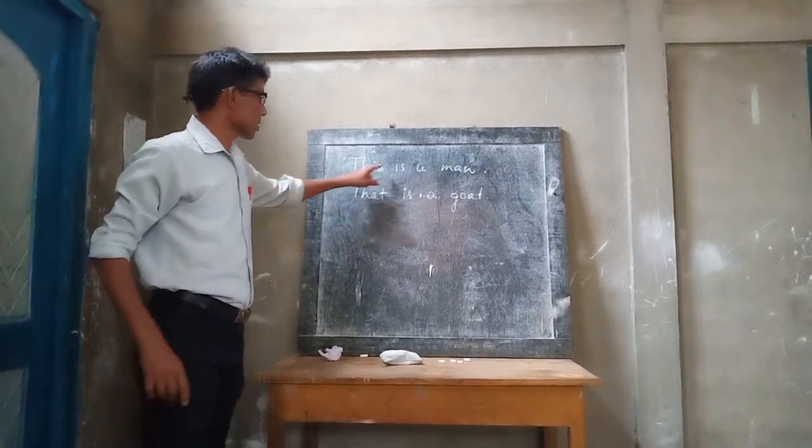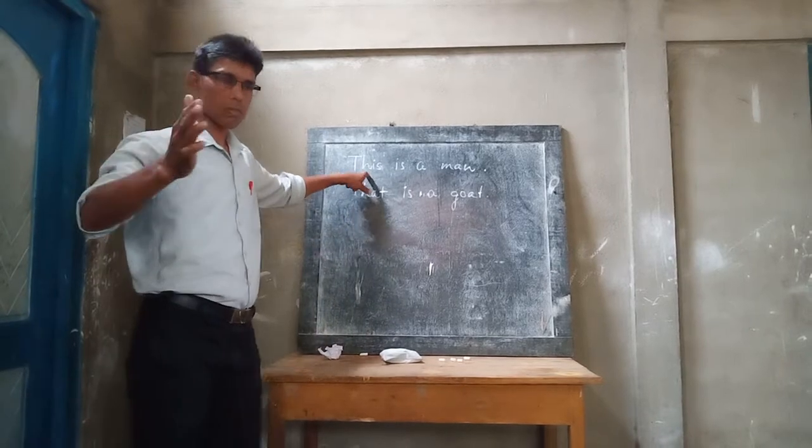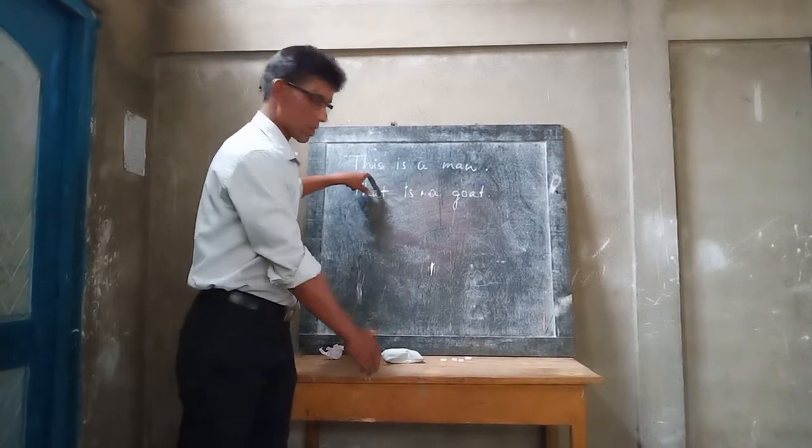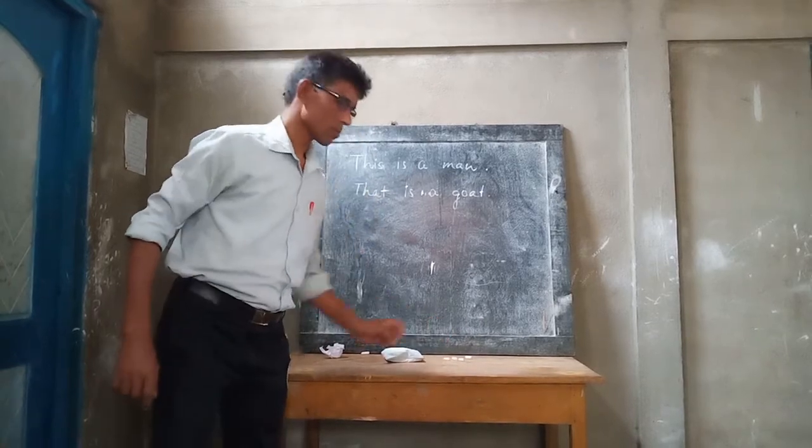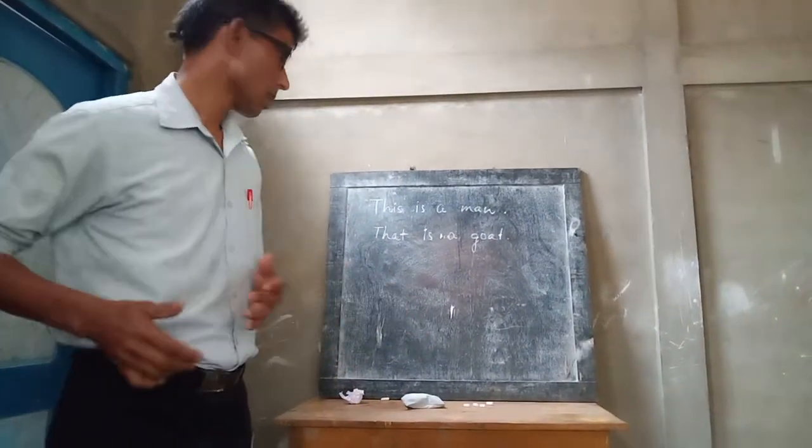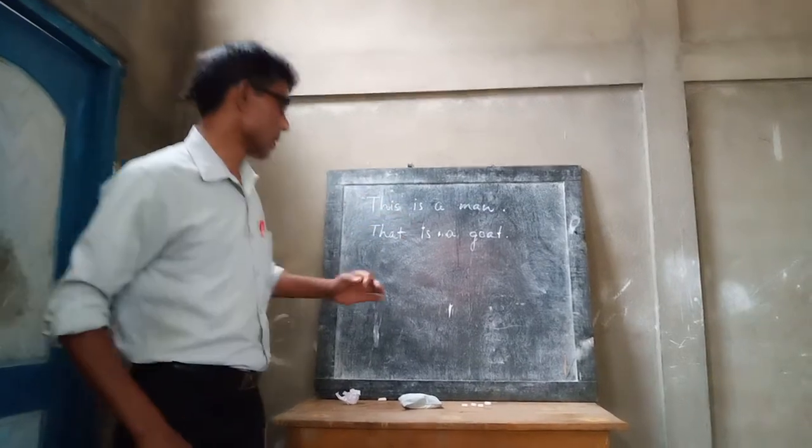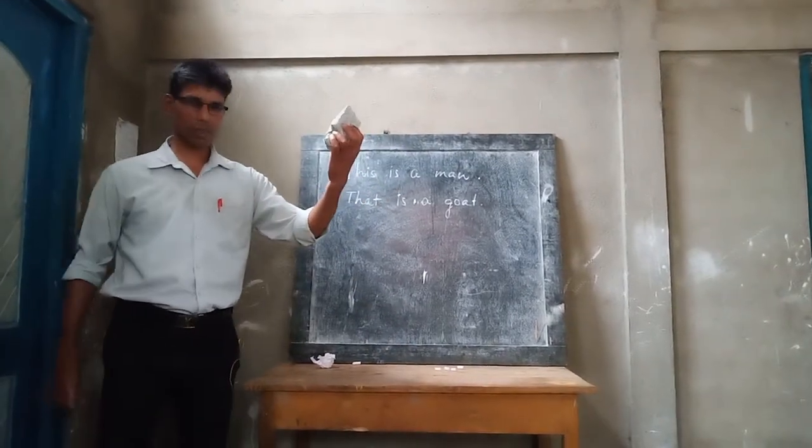Now, this is a man. 'This' means I am touching here. This is a duster. That is a board. This means I am touching here.